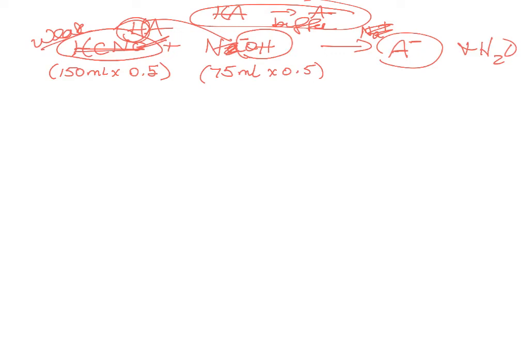Since it's like a disturbed buffer, we treat it the same way: do a mole table then use Henderson-Hasselbalch. Calculate moles by multiplying volume by molarity. We have 75 millimoles of the weak acid and 37.5 millimoles of hydroxide have been added.